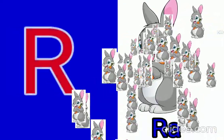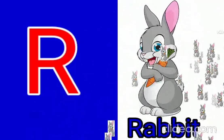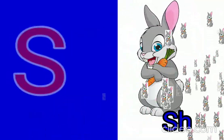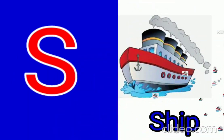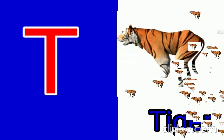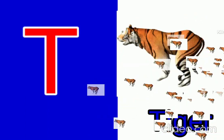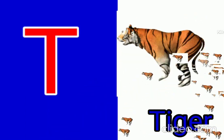R for rabbit, rabbit means the bush. S for sheep, sheep means the herd. T for tiger, tiger means bug.